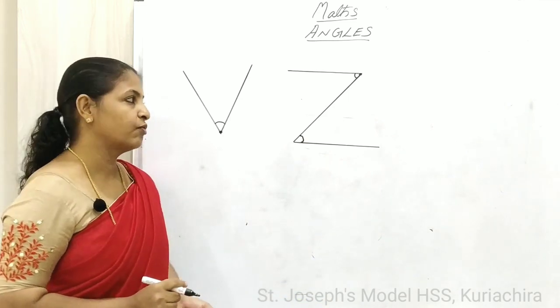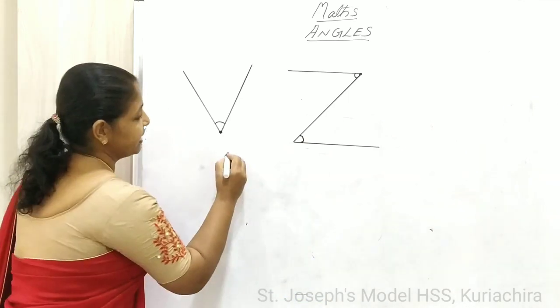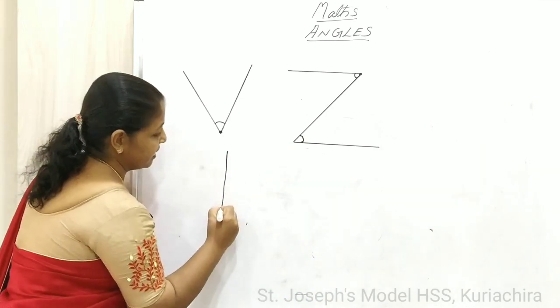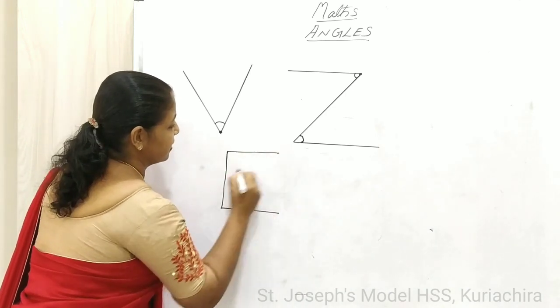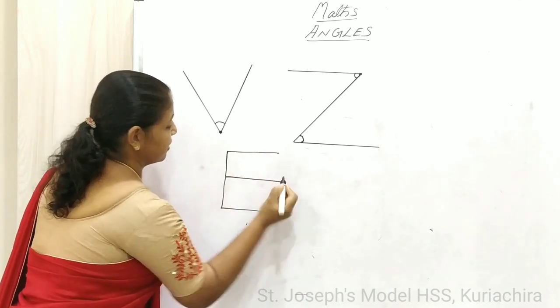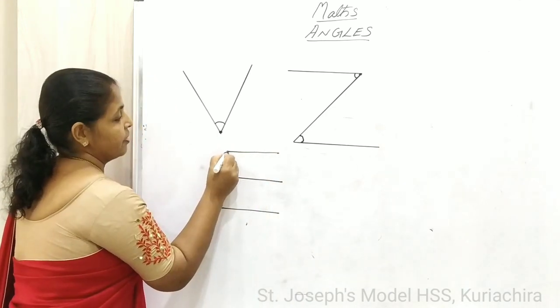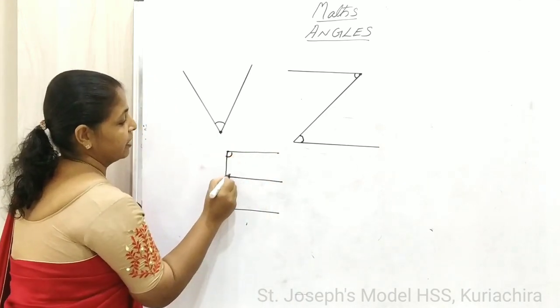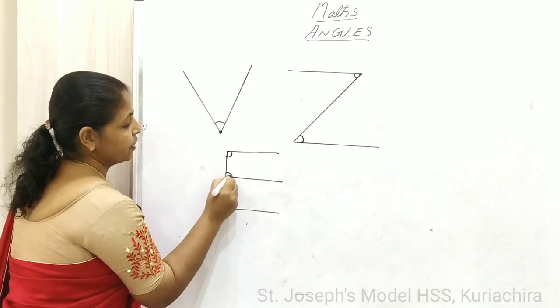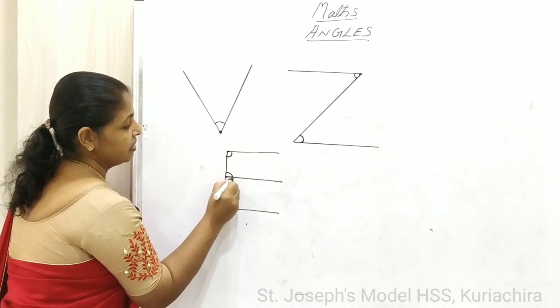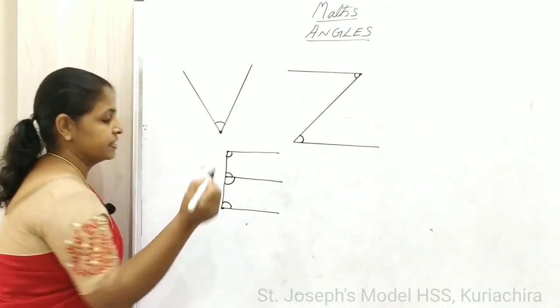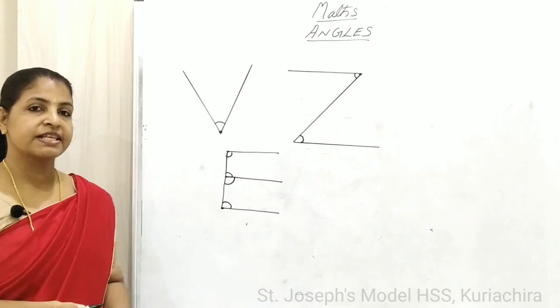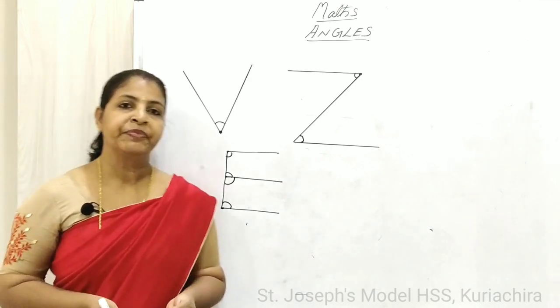Can you say how many angles are formed in letter B? One angle. How many angles are formed in letter C? Two angles. Then how many angles are formed in letter E? Four angles are formed.